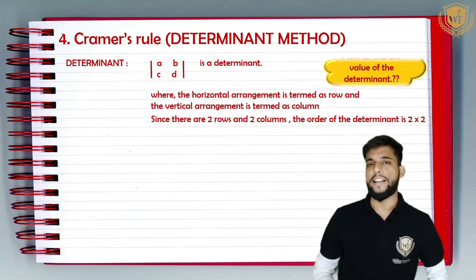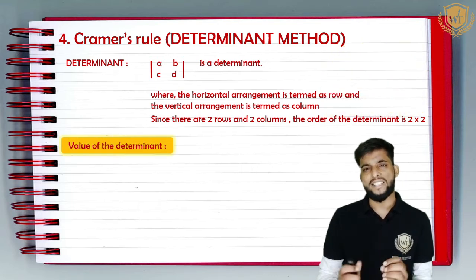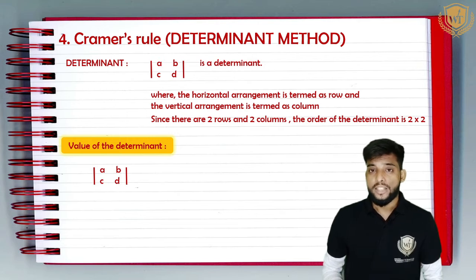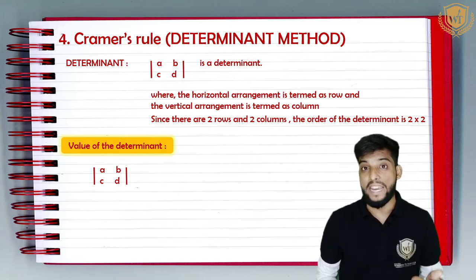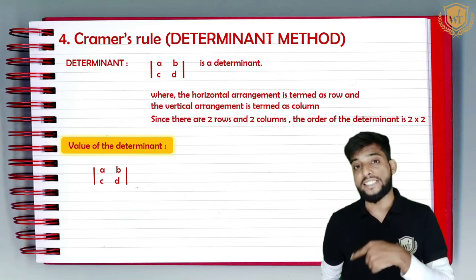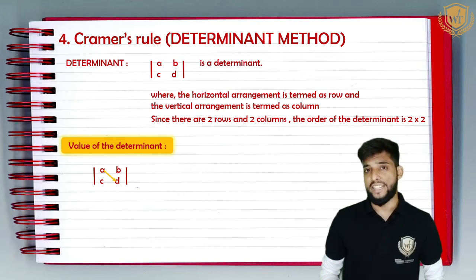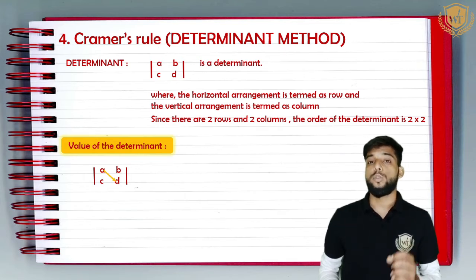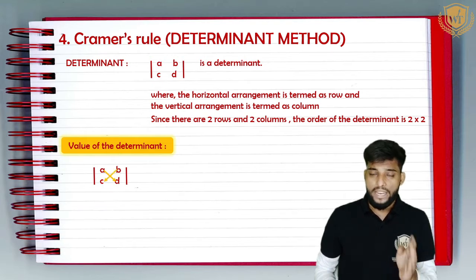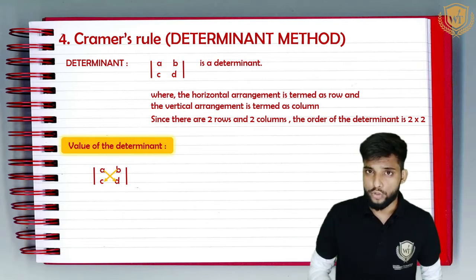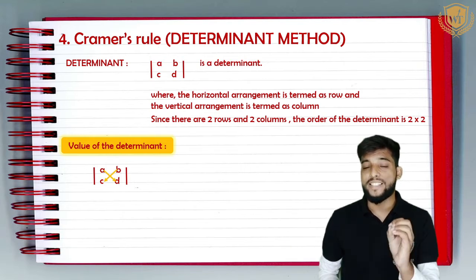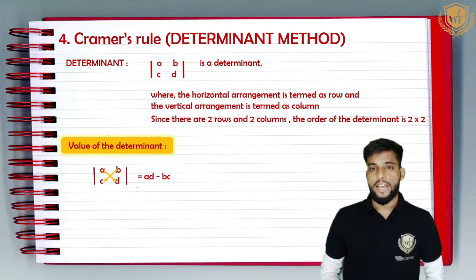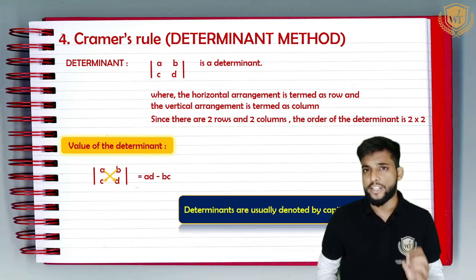Now the question arises: how do we find the value of this determinant? Let us take the general determinant with A, B as the first row and C, D as the second row. The first element A will be multiplied to D, and the second element B will be multiplied to C. Both terms are separated by a minus sign, so the value of the determinant will be AD minus BC.